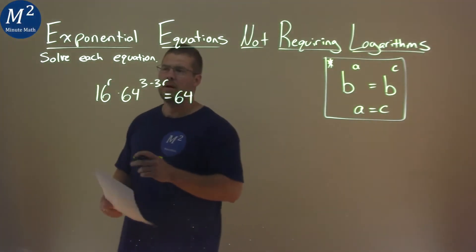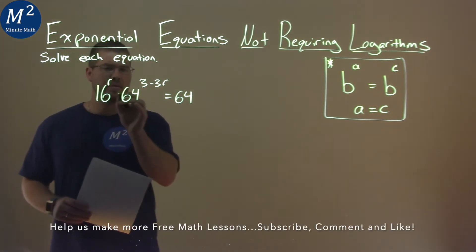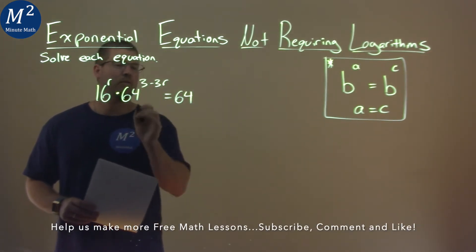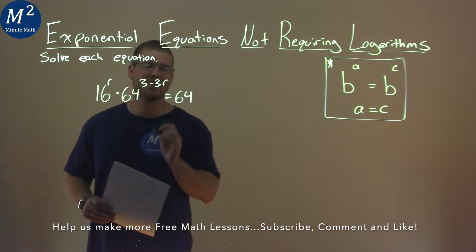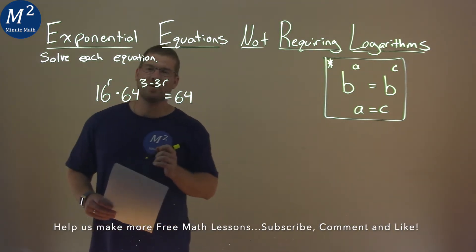We're given this problem right here: 16 to the r power times 64 to the 3 minus 3r power is equal to 64, and we have to solve this equation.